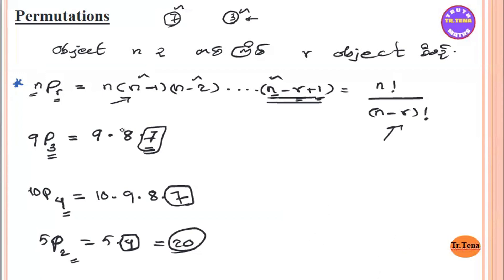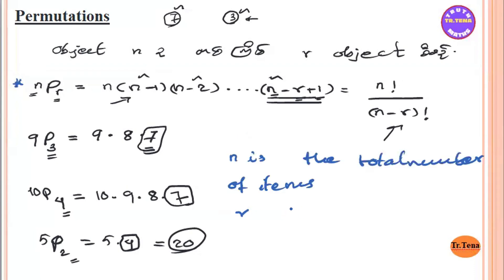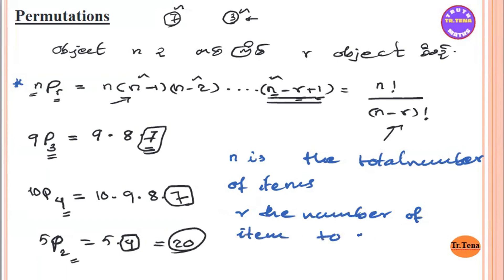So we can get the total number of items. We can get the total number of items to arrange. If we are looking at the item of n, then the item is n.